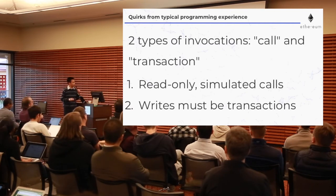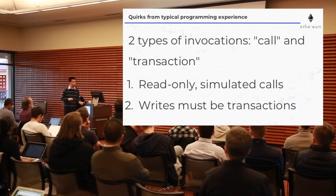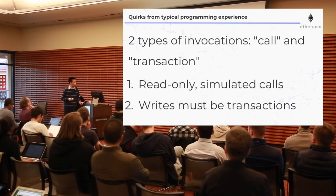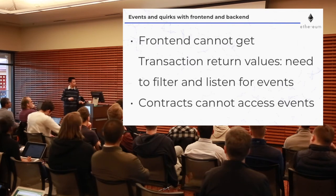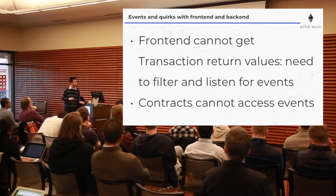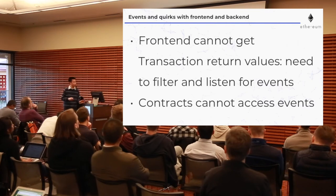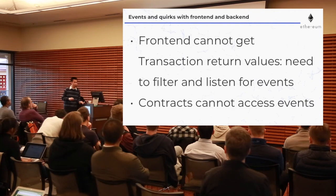There are two ways to invoke a function: a call or a transaction. A call is read-only and simulated. If you want to write to the blockchain, you have to use a transaction. On the front end, you cannot get transaction return values — you need to filter and listen for events. But contracts cannot get events.